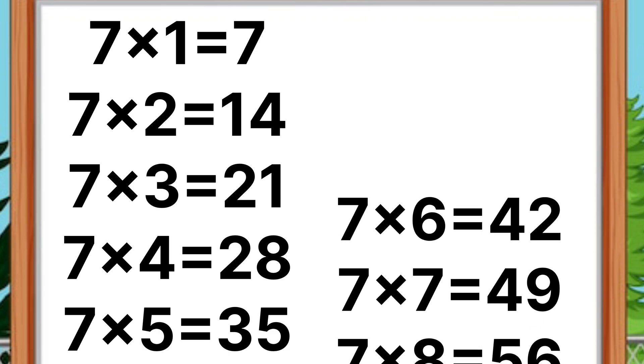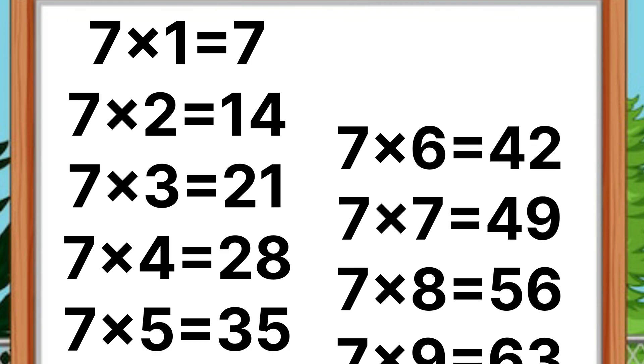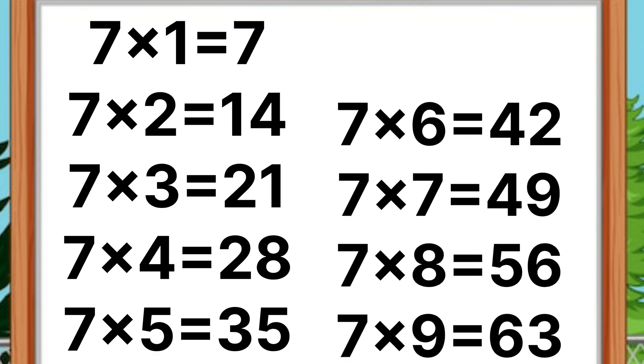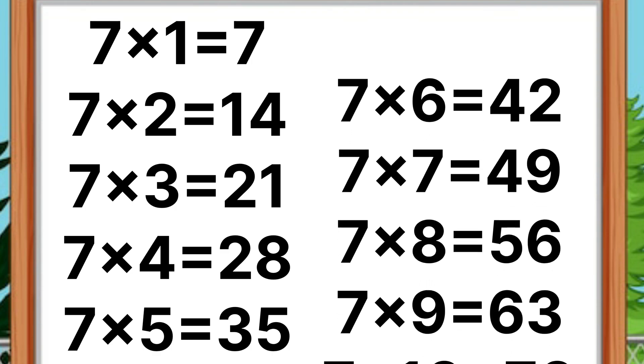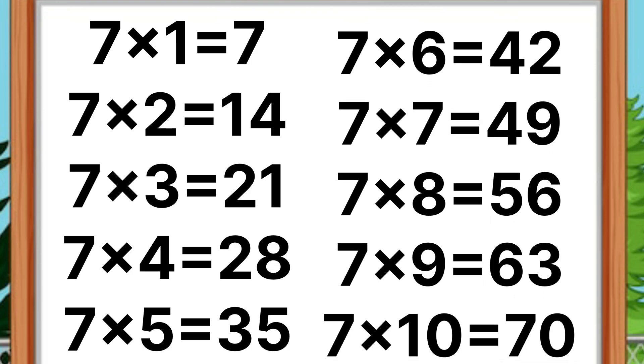Seven eights are fifty-six. Seven nines are sixty-three. Seven tens are seventy.